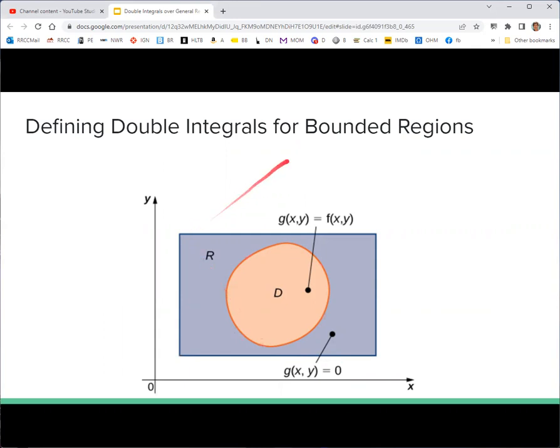What we can do is, if it's bounded, say the region D is bounded, then that means we can put a rectangle around it, outside of it. We'll call that rectangle R. Then the function we're integrating is F, but we're going to define a new function piecewise so that on the interior of D, F is equal to G. And then out here, outside of D, where F is not defined, we're just going to say that G is equal to 0.